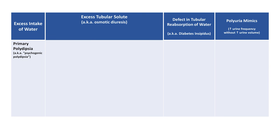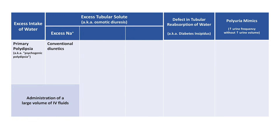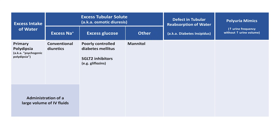When it comes to excess tubular solute, this can be further broken down by the specific solute. Excess sodium in the tubules is caused by conventional diuretics such as loop and thiazide diuretics. The administration of a large volume of IV fluids spans both excess water and excess sodium. Excess glucose is seen in either poorly controlled diabetes mellitus or in treatment with SGLT2 inhibitors, also known as gliflozins, which prevent the reabsorption of filtered glucose in the proximal convoluted tubule. The last major solute that can lead to an osmotic diuresis is mannitol, a medication rarely used specifically for this purpose.